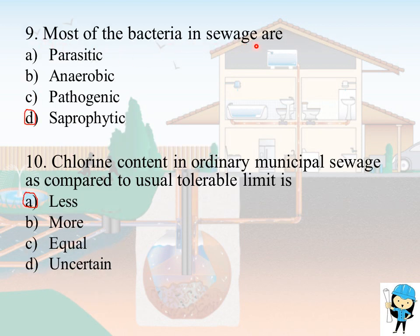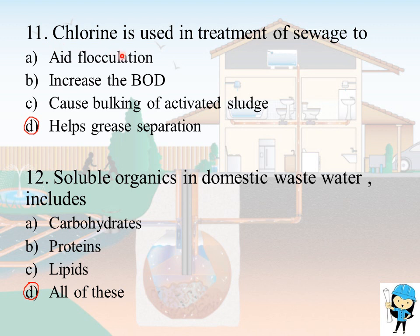Most of the bacteria in sewage are saprophytic. Saprophytic bacteria are those which absorb moisture and convert it into their food. Chlorine content in ordinary municipal sewage as compared to the usual tolerable limit is always less. Chlorine is used in treatment of sewage to help grease separation, because chlorine may break down oily lipids and fatty substances, hence it helps in grease separation.